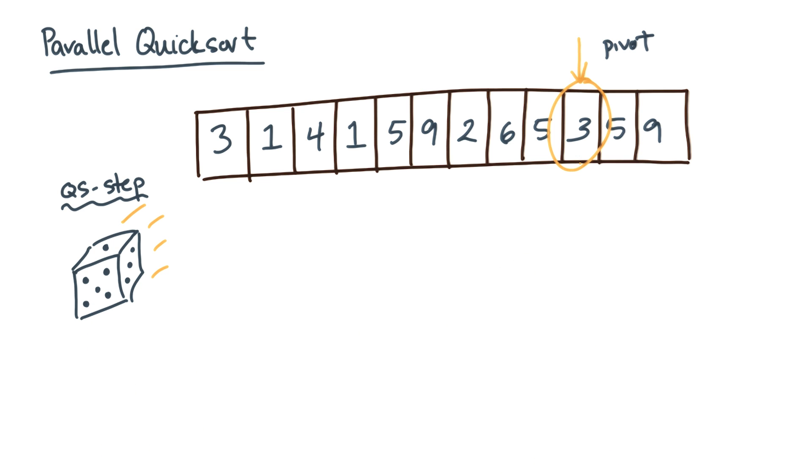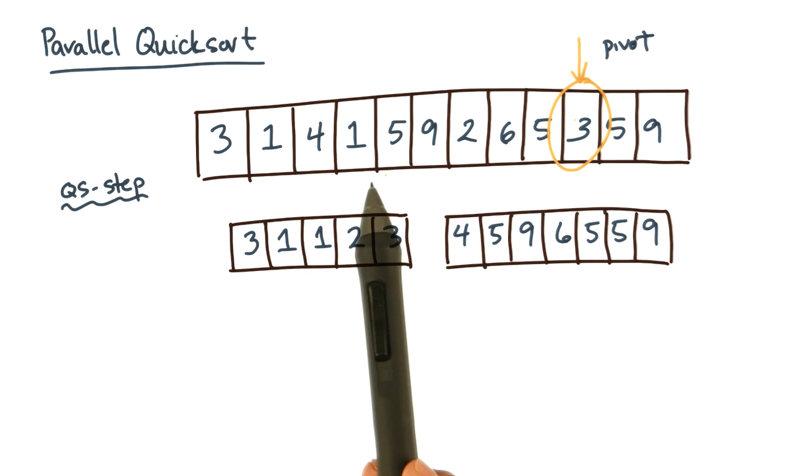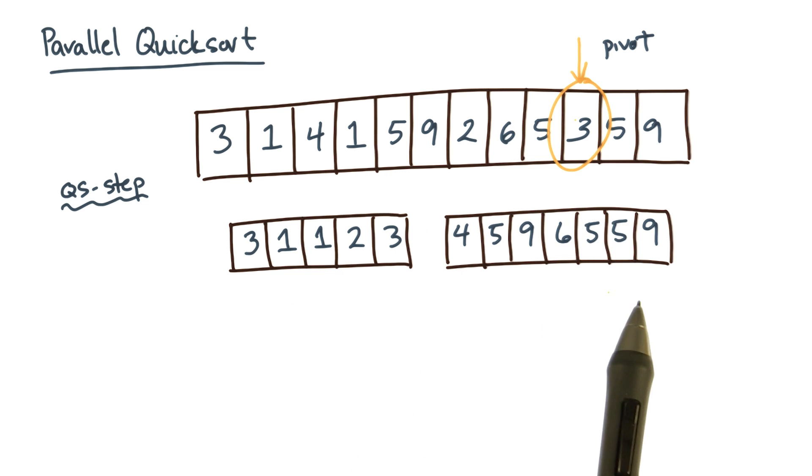The next part of a quicksort step is to partition the input around the pivot value. That means get all the elements that are less than or equal to the pivot and put them on one side, and get all the elements that are greater than the pivot and put them on the other side.